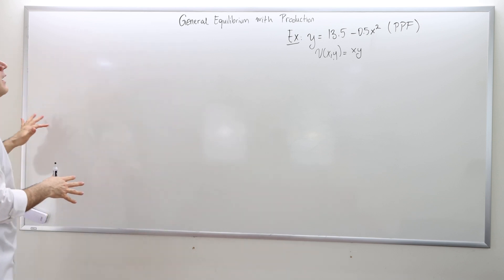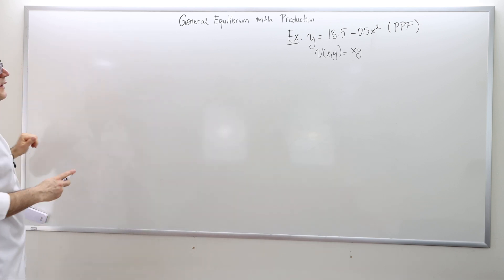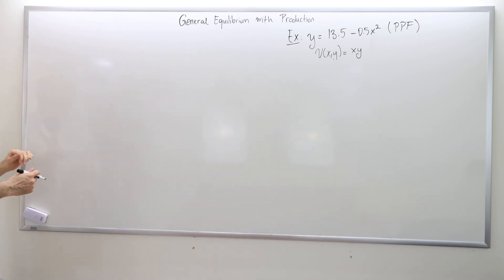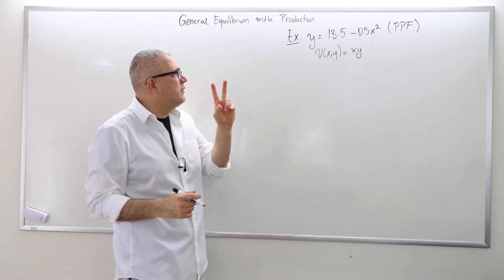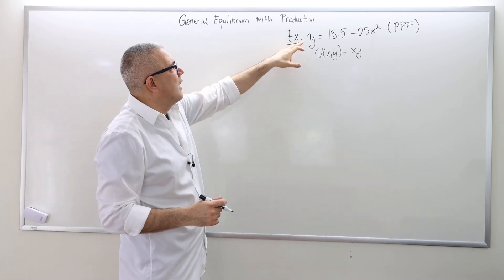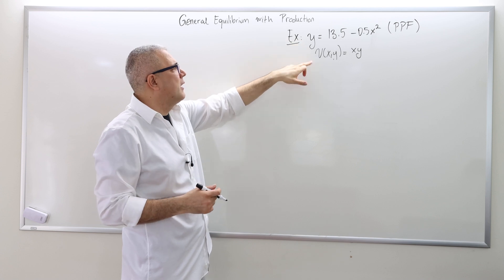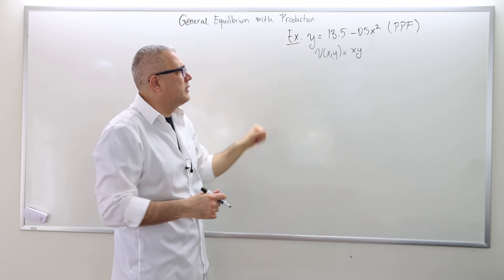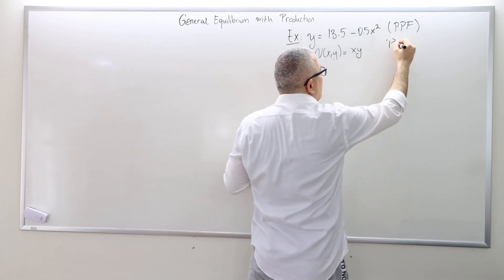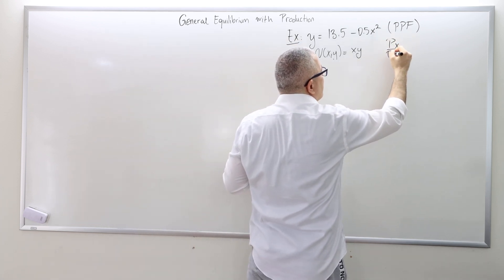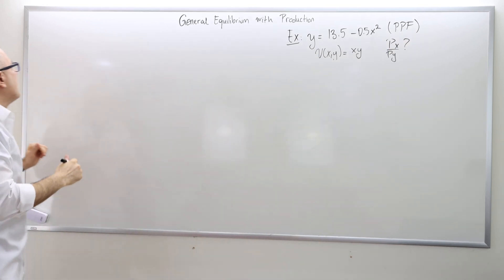After some cleanup, here is our example. Remember, we basically need two things: the production possibility frontier for this model, and then the utility function. All we have to find at the end is the price ratio in competitive equilibrium.